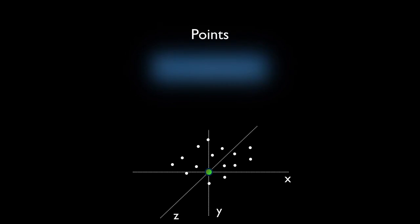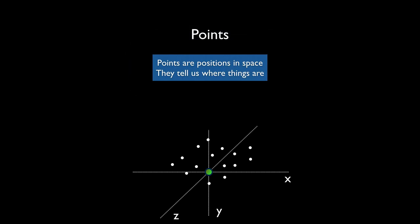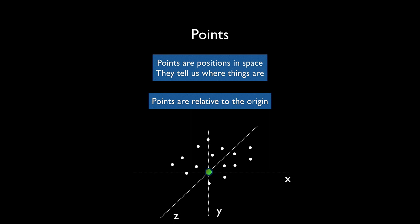Points are positions in space — they tell us where things are. All the examples are in 3D, so these are points in 3D space. That special green dot is called the origin, and all points are always relative to their origin, which is basically the special point coordinate zero, zero, zero. Points are the basic building blocks of doing anything in 3D, because if you don't have a point or a position you just don't know where you are.